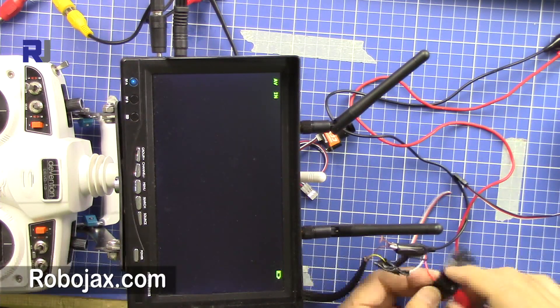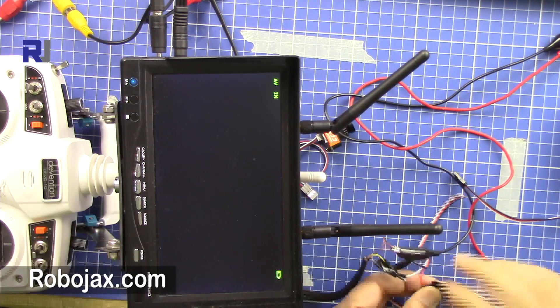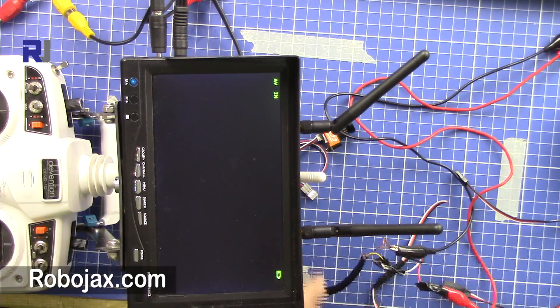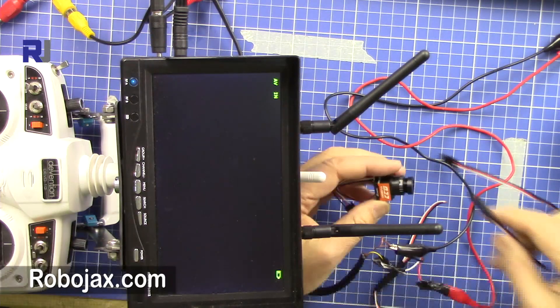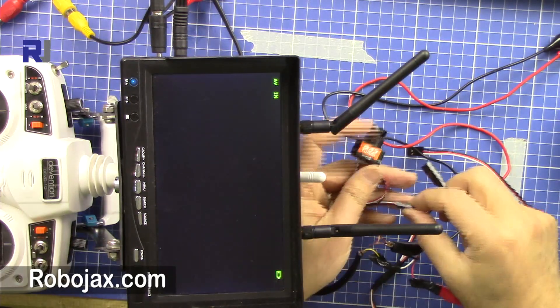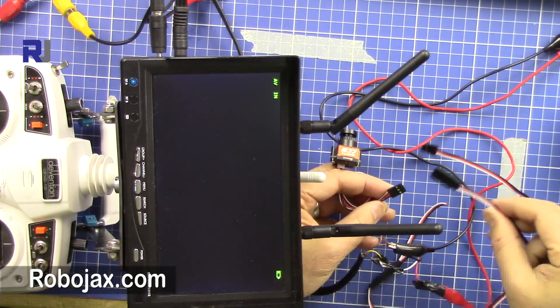So let me just isolate the positive. I don't want any spark or anything. Now let me just plug this in because I'm connecting it with 3 cell.